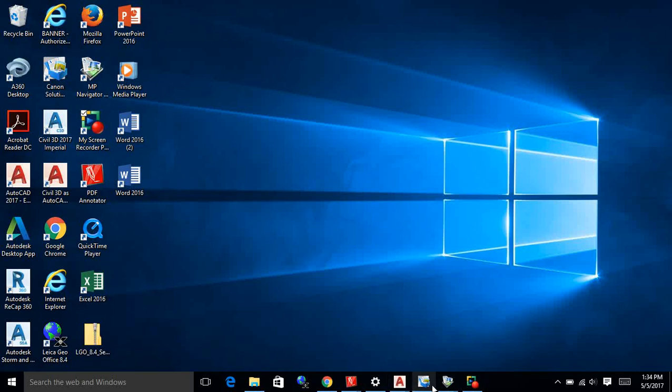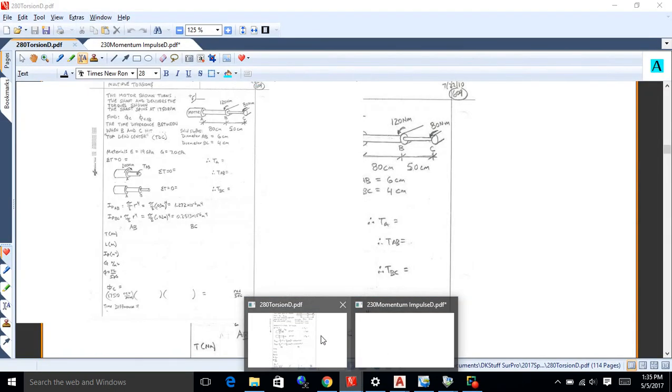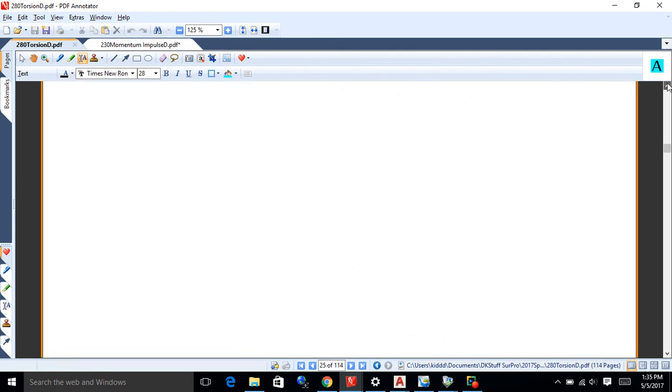All right, so we've done the basics on torsion. I just want to cover one little thing here. And the little thing is multiple torsions. Now, one thing I'd point out, I think this is 609, I'm pretty sure. Okay, one thing I'd point out is when we're doing the linear stuff with normal stress, we have a formula, and the formula says delta is PL over AE. So this is axial.